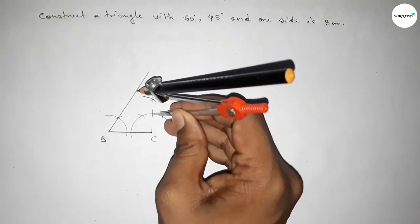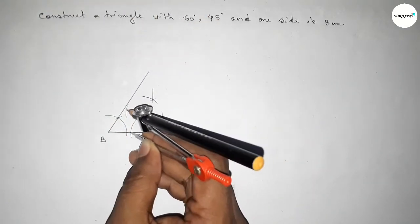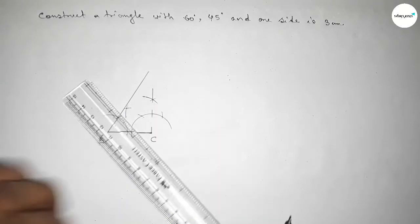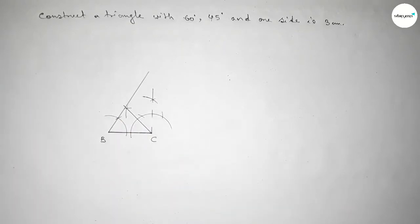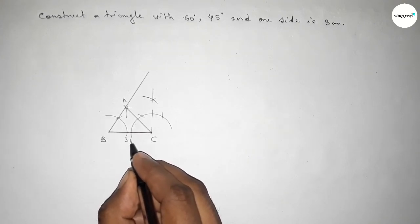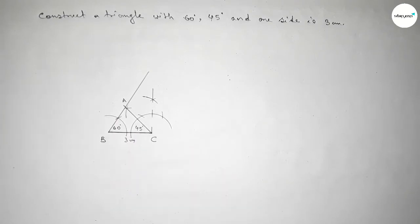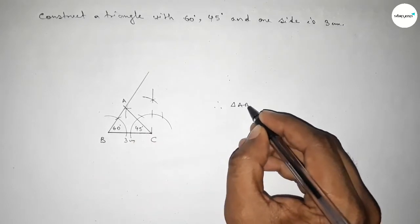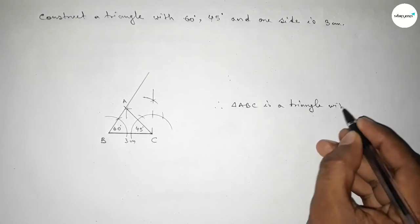Now bisecting this 90 degree angle to get 45 degree. Putting the compass here, taking an arc, drawing with same length, and putting the compass here to cut. Both curves intersect at a point. Joining this line, both lines intersect at a point, taking here point A.